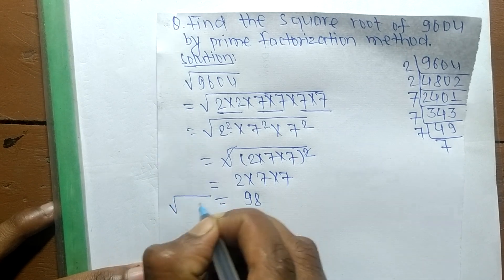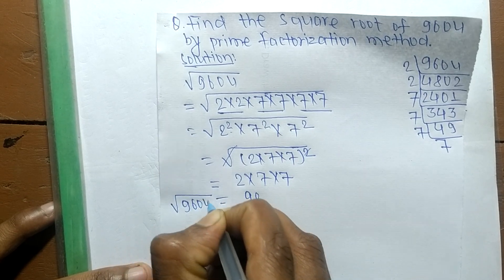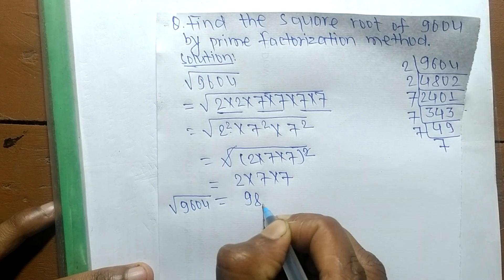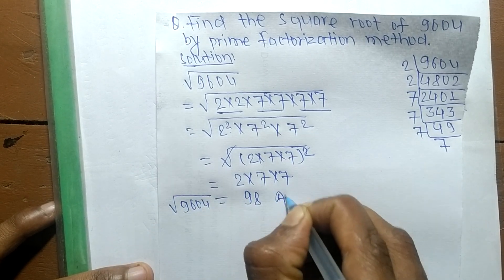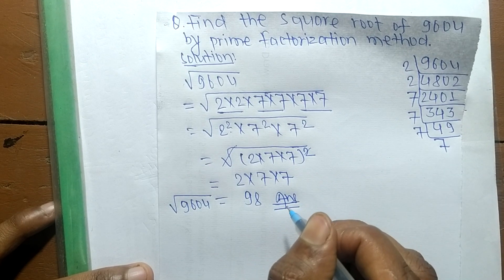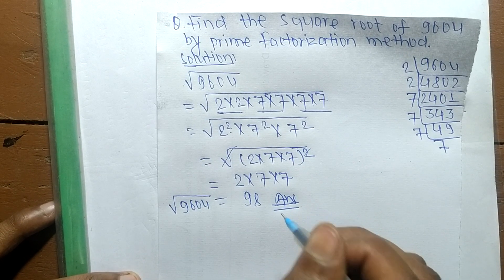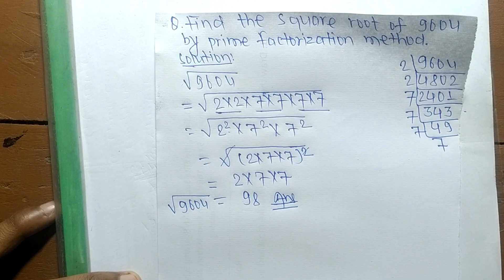So the square root of 9604 is equal to 98. That's all for today, and thanks for watching.